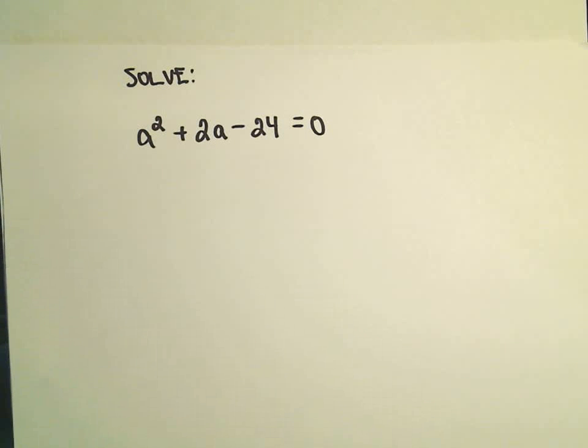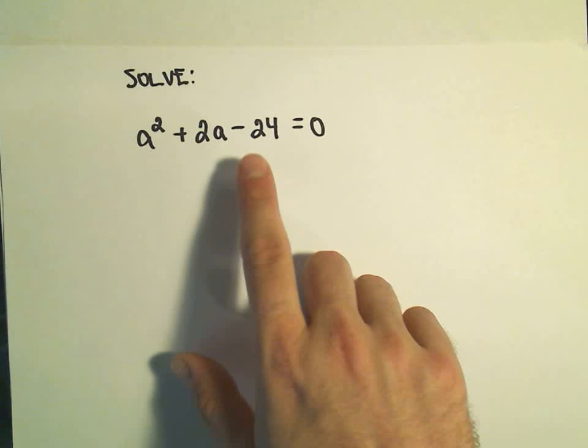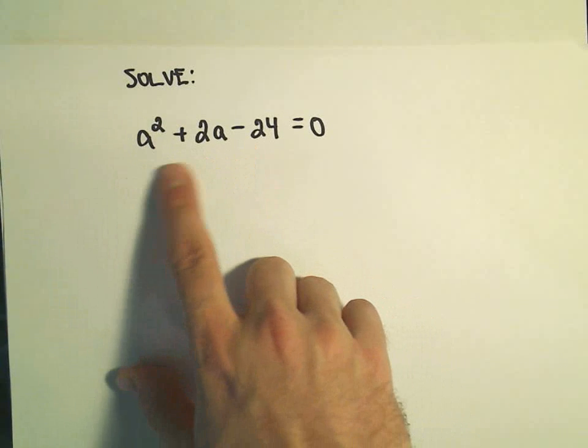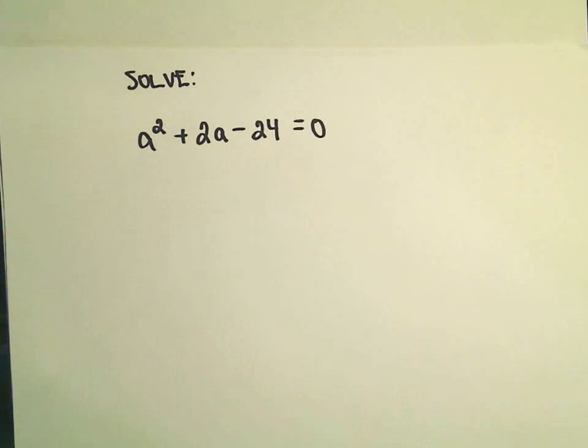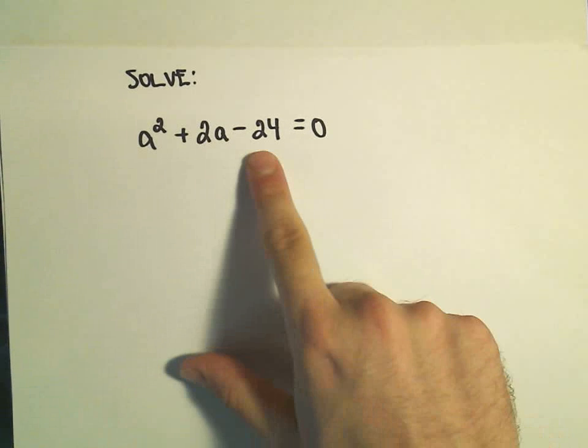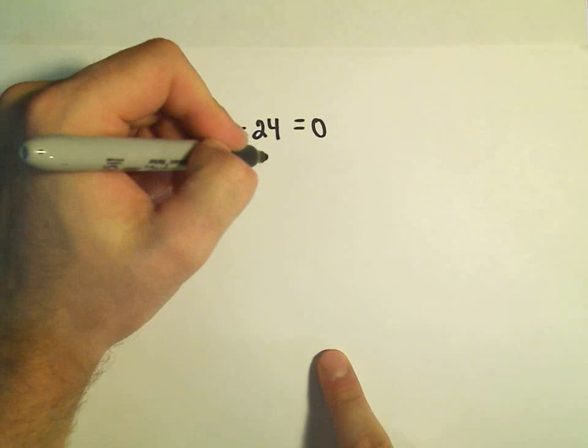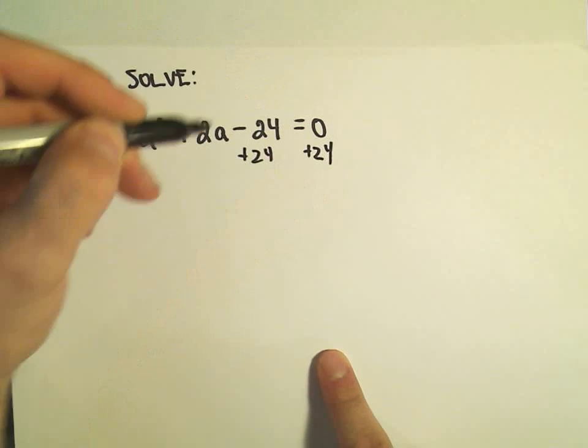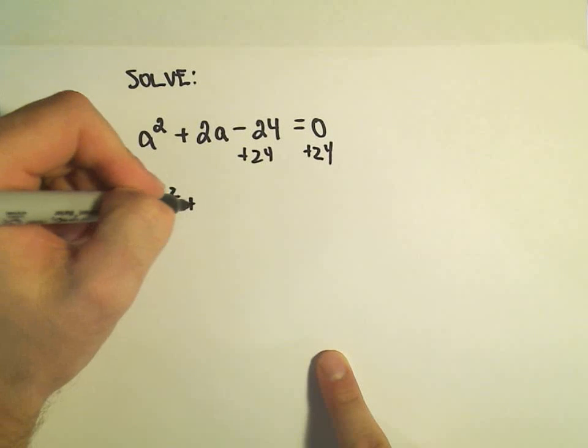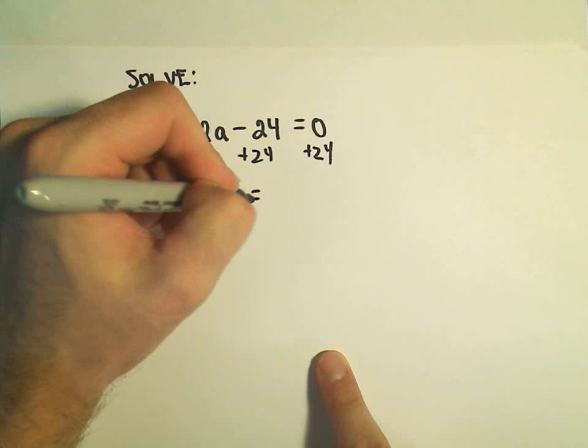And again, one way of doing the completing the square procedure is simply by getting the a's on one side and putting the number on the other. So I'm going to add 24 to both sides. That will be my first step here. So we've got a squared plus 2a equals 24.